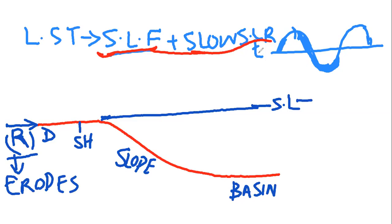At normal sea level, the river enters and carries sediments within its channel, depositing them up to the delta and relatively further into the shelfal region. The sediments are deposited there — they don't reach out and are not transported towards the basin. They are deposited in the shelfal region or deltaic environment.